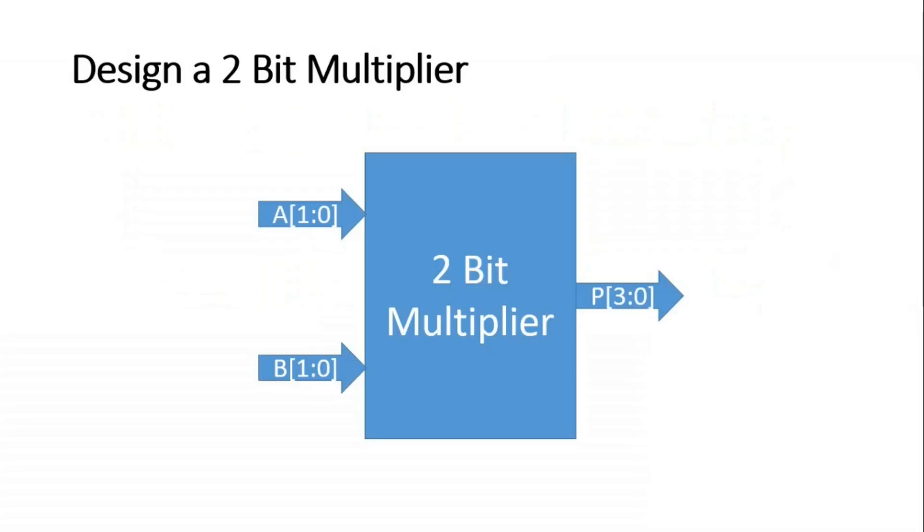Friends, the very first question is on your screen where you have to design a 2-bit multiplier. What do I mean by 2-bit multiplier? A 2-bit multiplier has two inputs, let us say A which is of 2 bits and B which is B1 and B0, and the output of this 2-bit multiplier will be P which will be 4 bits long.